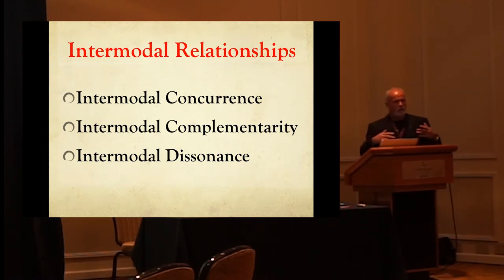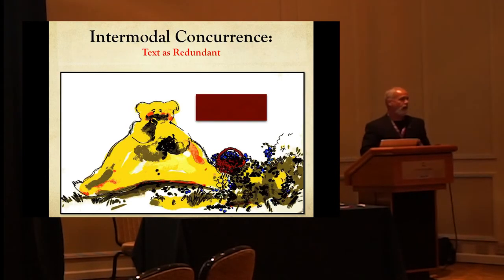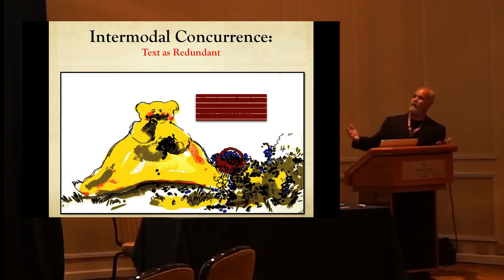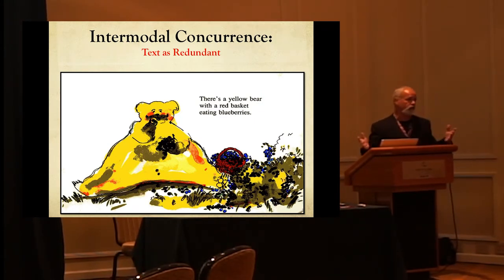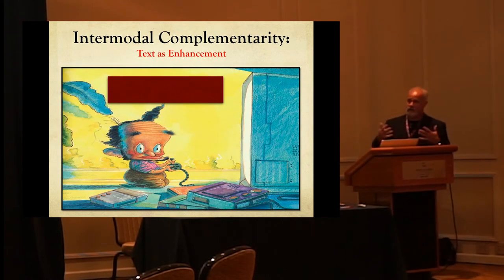When we have picture books like Brown Bear, Brown Bear and some beginning reader books, they have a lot of what we'd call intermodal concurrence. We see a picture and the text is almost like an anchor — it's repetitive, it's redundant. It tells exactly what we see in the picture: there's a yellow bear with a red basket eating blueberries. Beginning readers use this a lot, and the New Zealand series did this a lot.